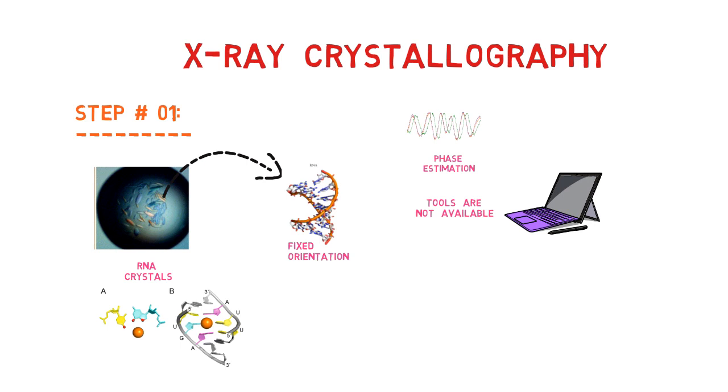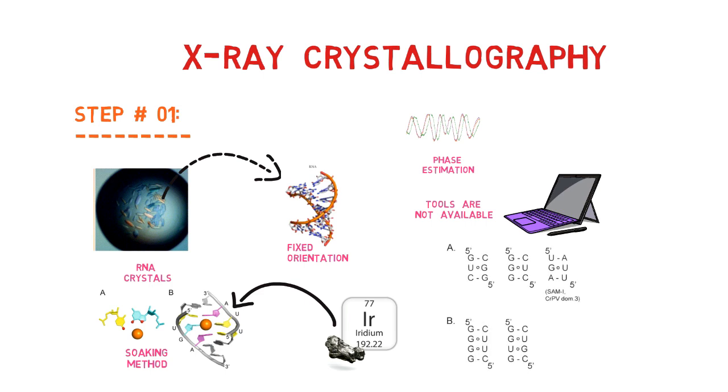To introduce heavy atoms into RNA crystals, soaking methods are commonly used. Iridium has emerged as a popular choice and has been utilized to phase nearly half of the recently determined RNA structures. The soaking process can be facilitated by engineering GU-wobble pairs in RNA helices, as they provide high affinity binding sites for trivalent hexamine complex ions, such as cobalt, iridium, and osmium.